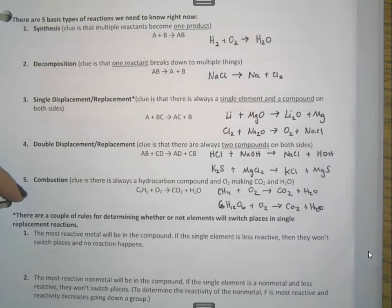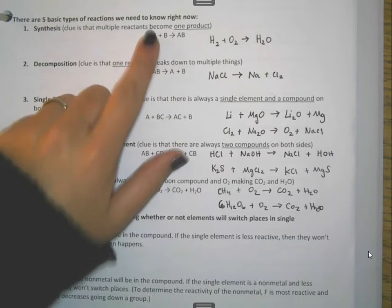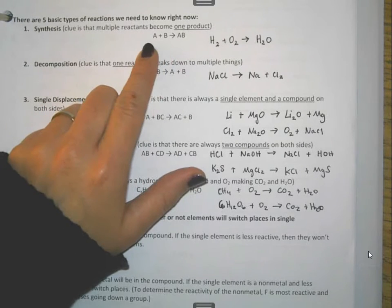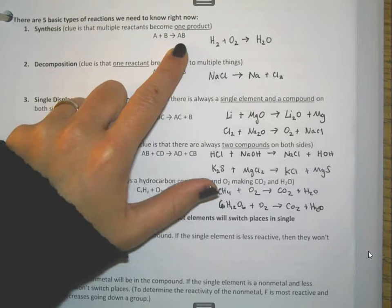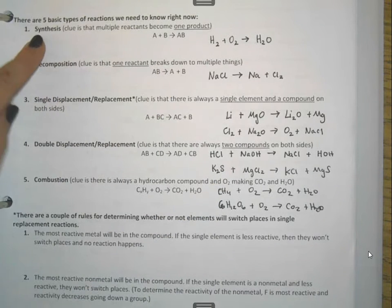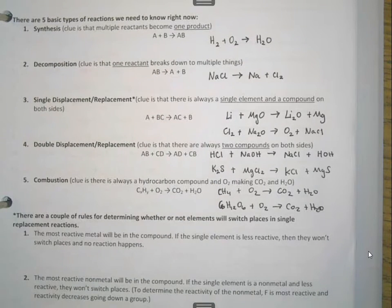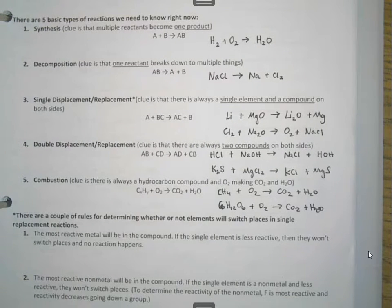I have for you some very generic breakdowns of these written as just A and B. A would be an element, B would be an element, and then AB would be a compound. The thing about each one of these is to be able to identify what you have. If you have a synthesis reaction, I have out here to the side that you will have one product. When you see that it makes one end something, you have a synthesis reaction.